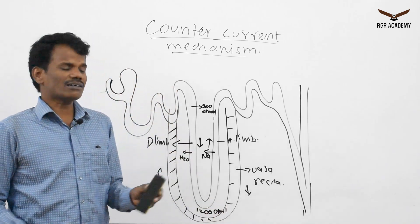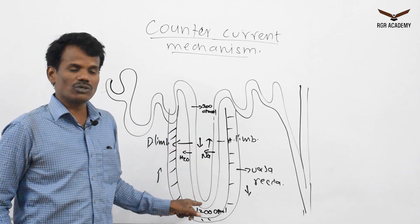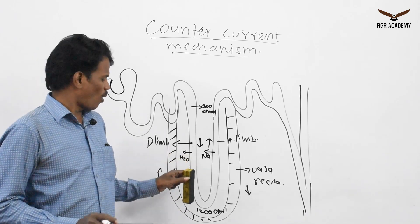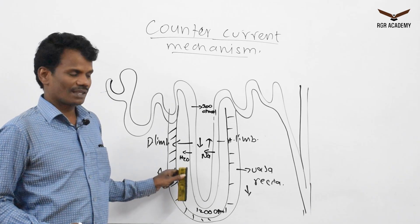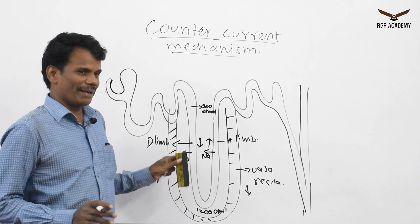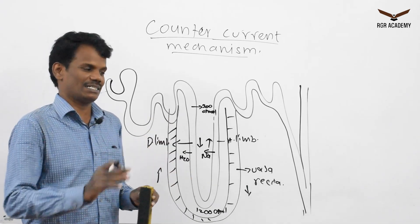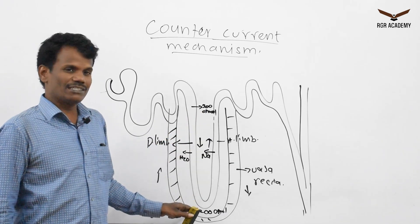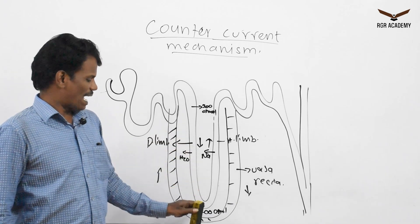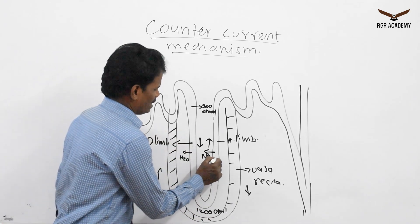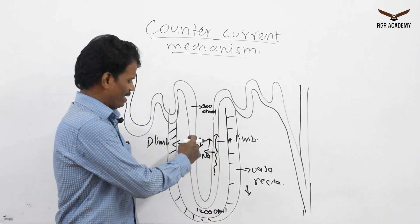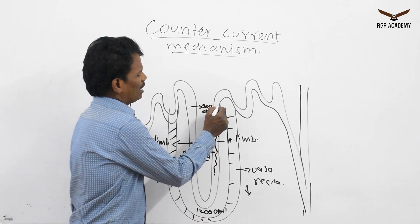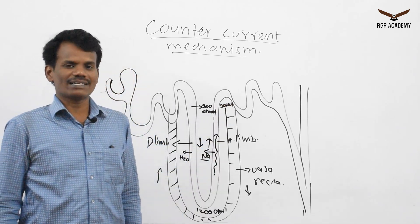The salt concentration from cortex to medulla has increased. This is because of the flow of water out from the descending limb, which makes the glomerular filtrate more concentrated. That is why at the cortex region it is 300 osmolarity and at the medullary region it is 1200 osmolarity. As the fluid flows through the ascending limb, salt comes out and the fluid returns to 300 osmolarity when it reaches the cortex region.